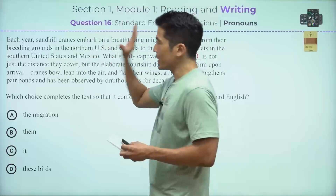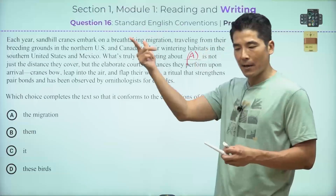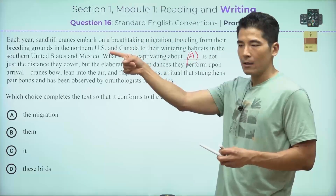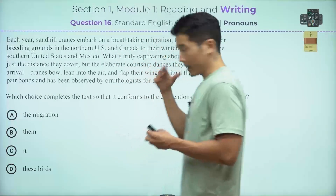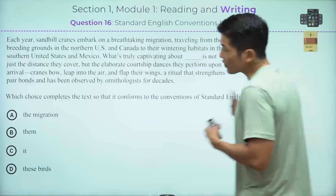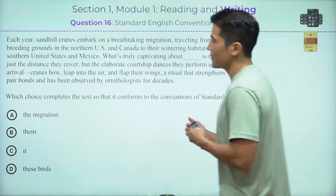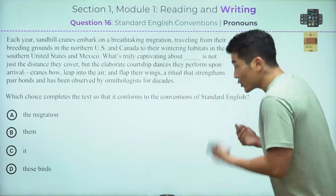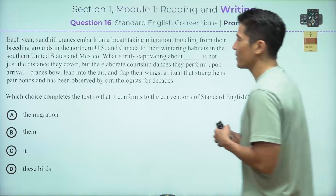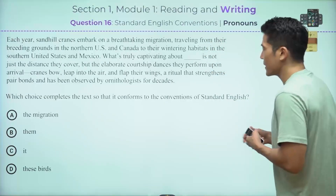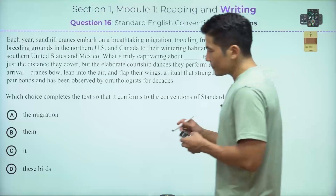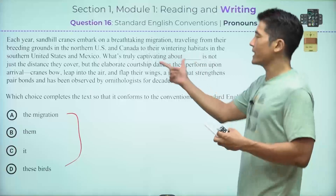For pronoun questions, we think about clarity — singular pronouns must have a singular noun. Here's the passage: 'Each year, sandhill cranes embark on a breathtaking migration, traveling from the breeding grounds in the northern US and Canada to their wintering habitats in the southern United States and Mexico. What's truly captivating about [blank] is not just the distance they cover, but the elaborate courtship dances they perform upon arrival. Cranes bow, leap in the air, and flap their wings — a ritual that strengthens the pair bonds.' The key is to understand the logic and read what comes afterward.